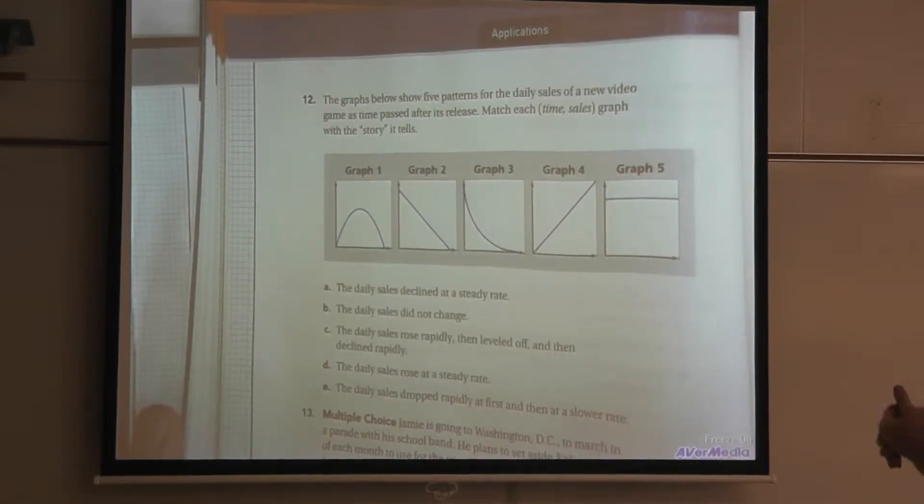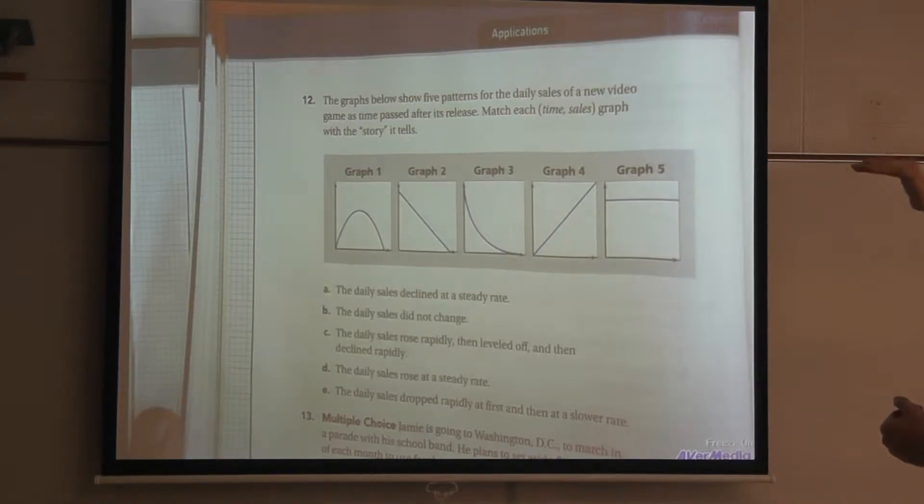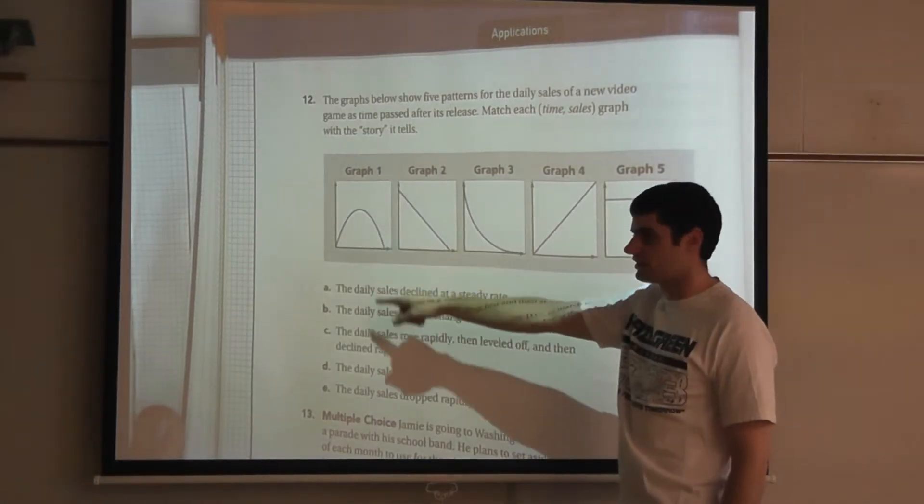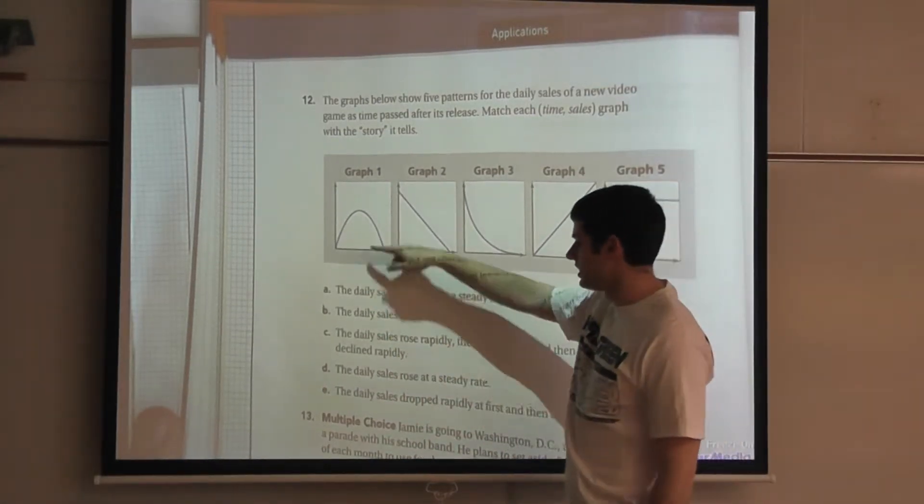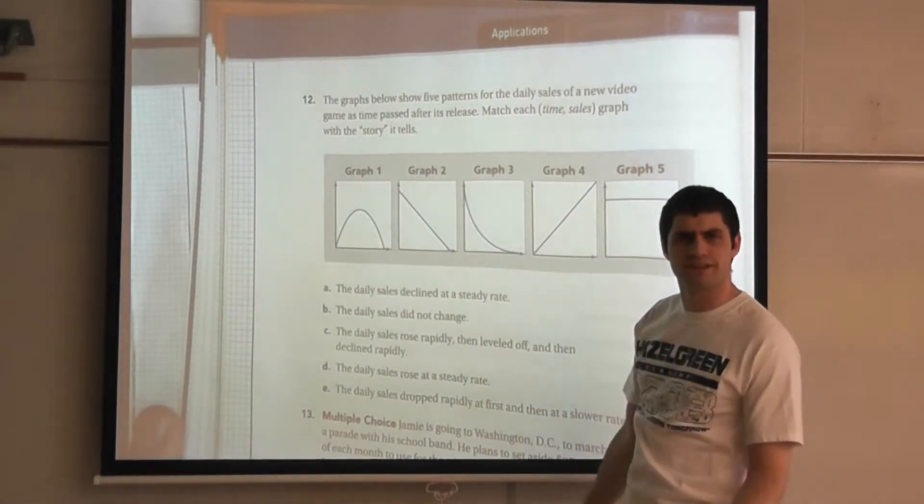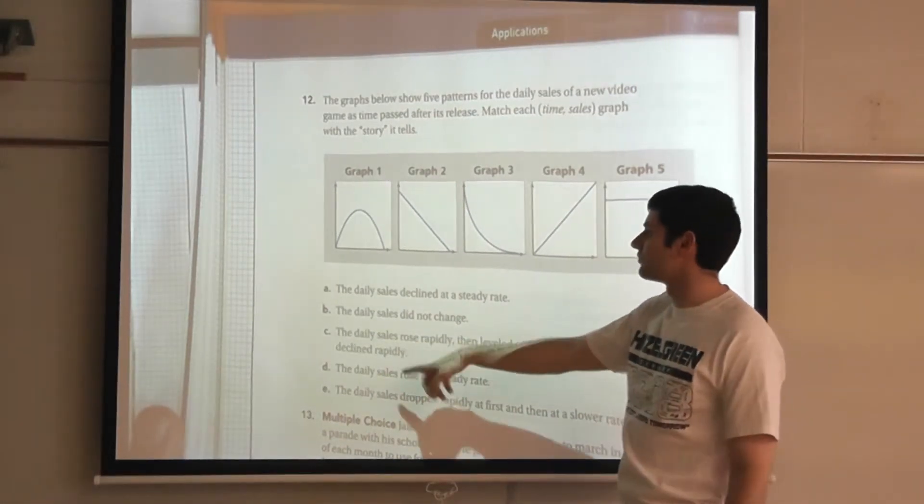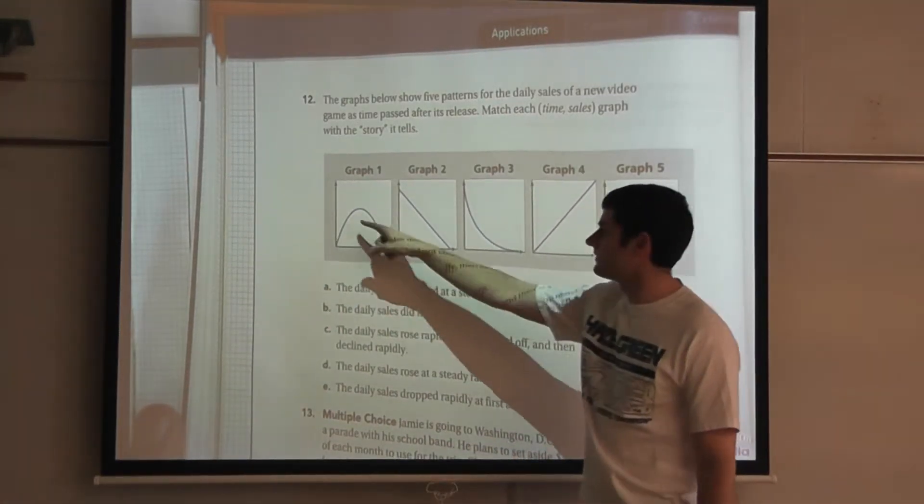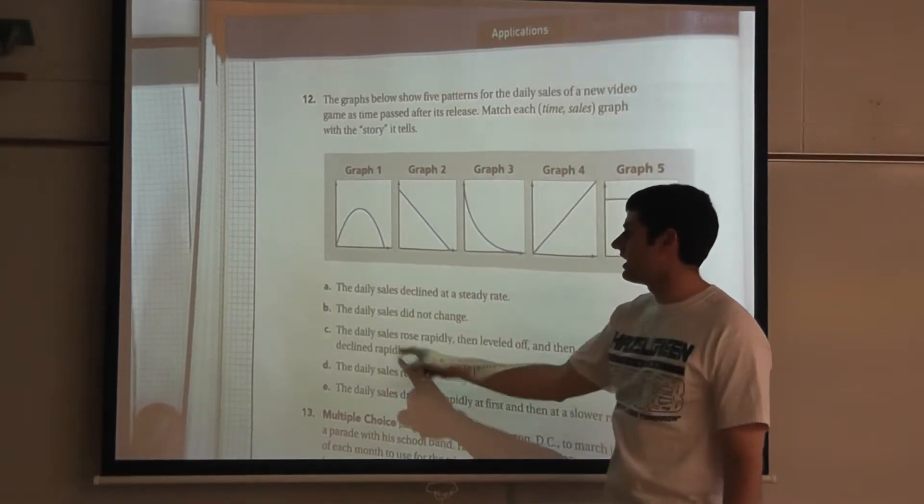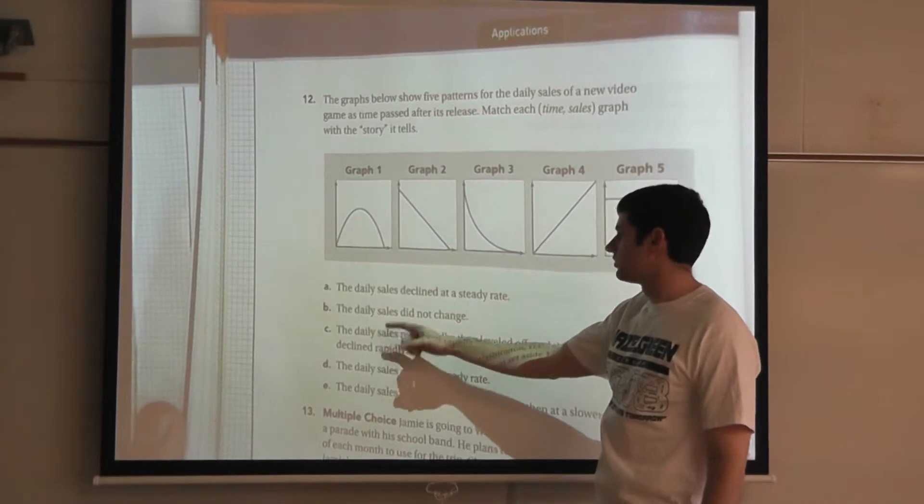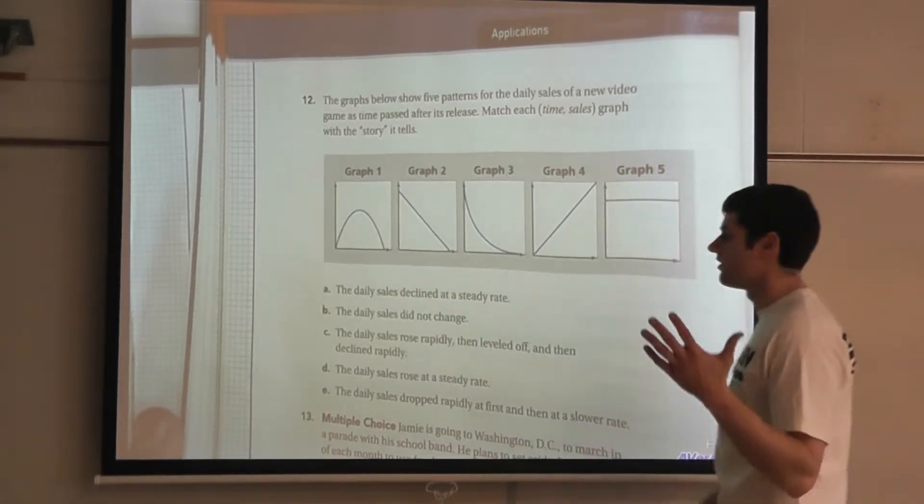The daily sales rose rapidly then leveled off and then declined rapidly. That's a little interesting. So they rose, they went up at first. Then they kind of became even and they declined very fast. Well, if I look at these up here, graph 1 is going to match with C because the daily sales rose rapidly, so they went up very fast. Then they leveled off, so then it kind of stayed the same for a little bit. And then it declined rapidly or very quickly. It dropped down.